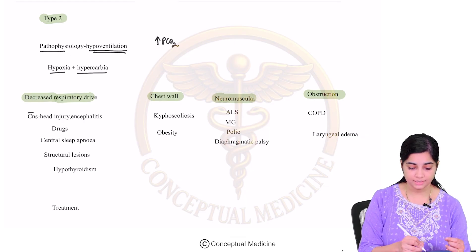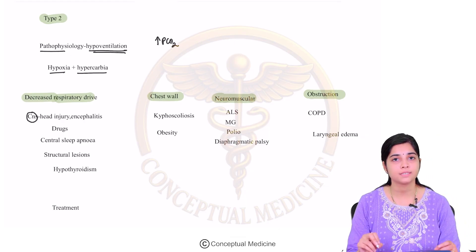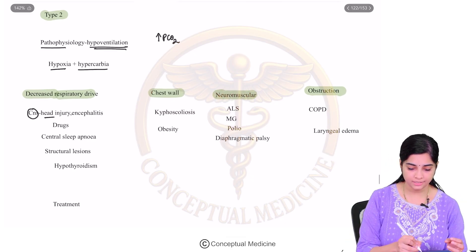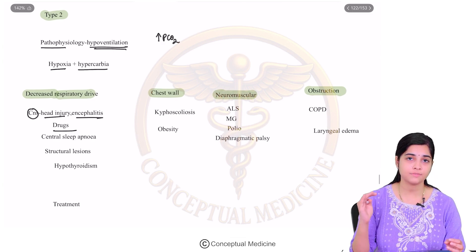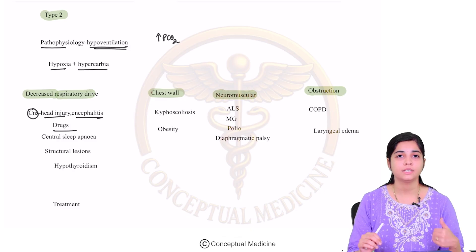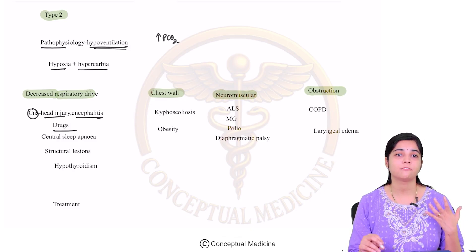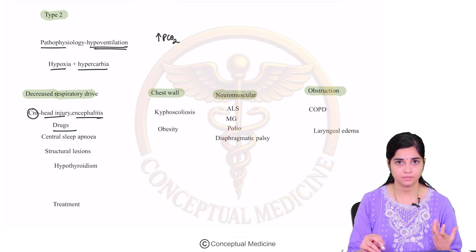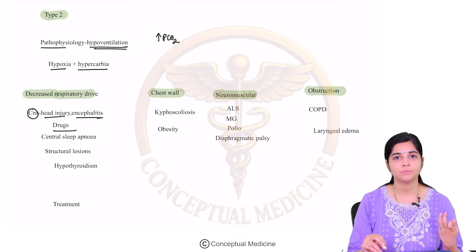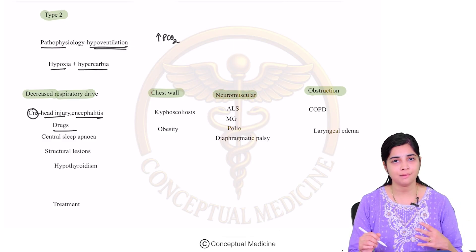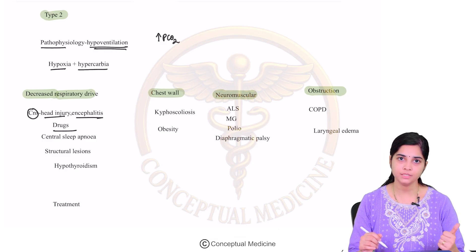The respiratory center is in the medulla. Any damage or insult to the brain — CNS infections, head injury, encephalitis, or drugs which suppress the central respiratory center — can cause decreased respiratory drive. When the respiratory centers are damaged, the carbon dioxide cannot be reduced because normally they are stimulated by CO2 accumulation to help remove PCO2.